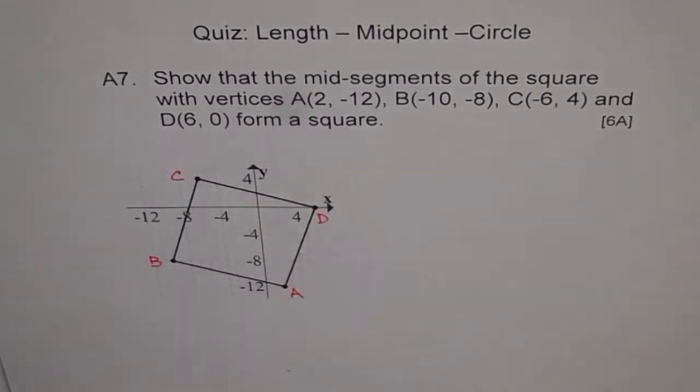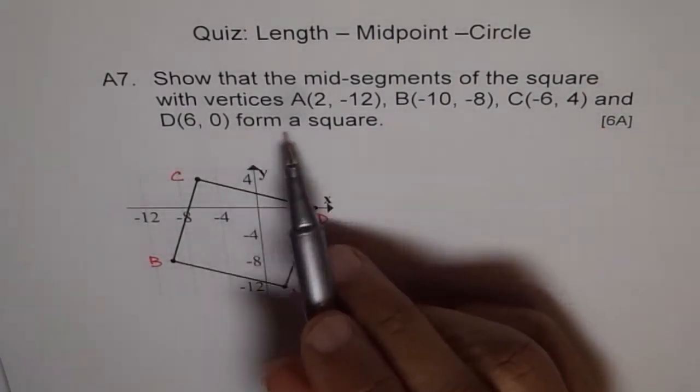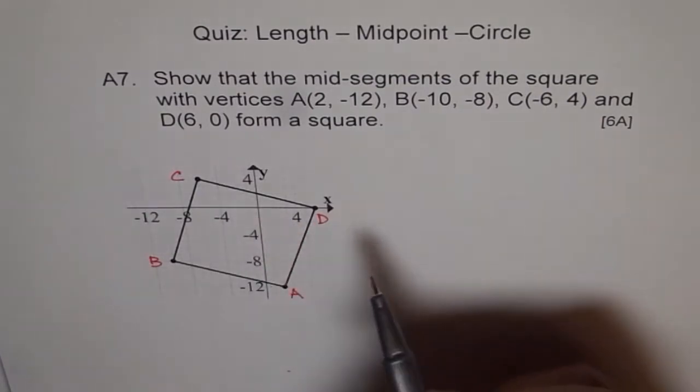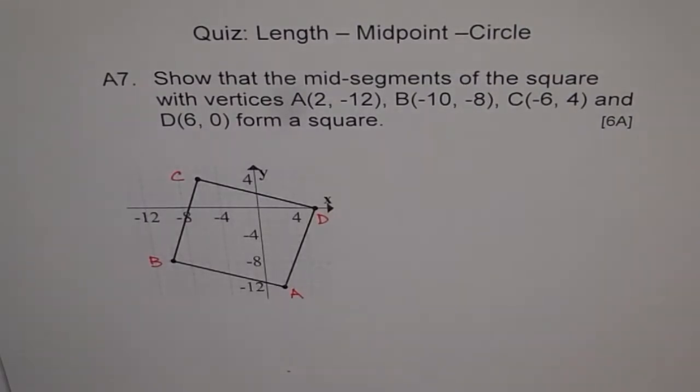Show that the mid-segments of a square with these vertices also form a square. So we have to find the midpoint of each side. I will not do this exercise for you, but what you can do is find the midpoint. We will just make a framework for you.